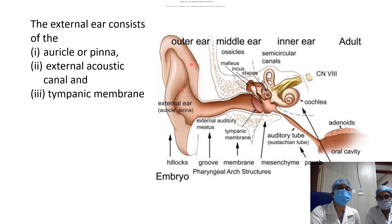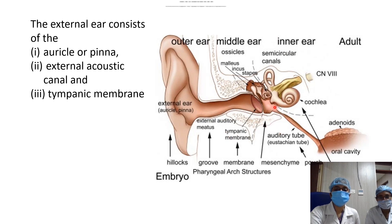The external ear gross anatomy consists of the pinna, also known as the auricle, the external acoustic canal, and the tympanic membrane. In this diagram we can also see the middle ear, which is an air-filled cavity consisting of three ossicles — malleus, incus, and stapes — connected via the oral cavity and the nasopharynx via the auditory or Eustachian tube.